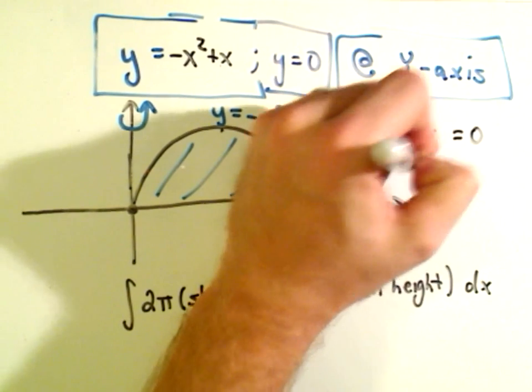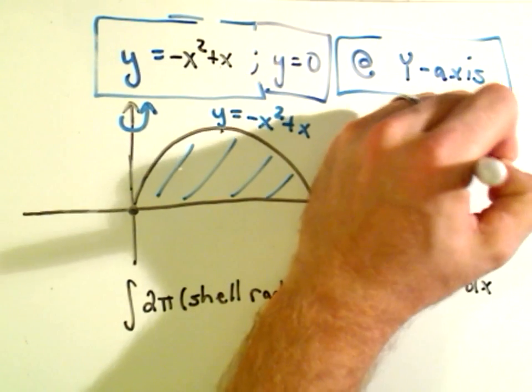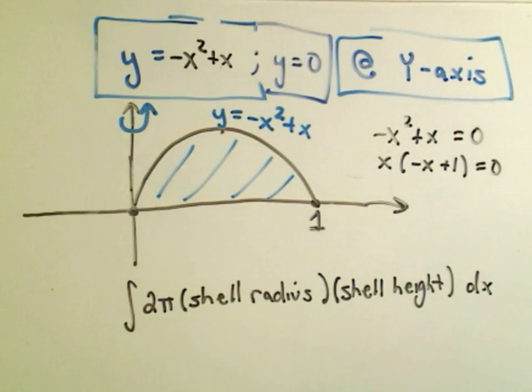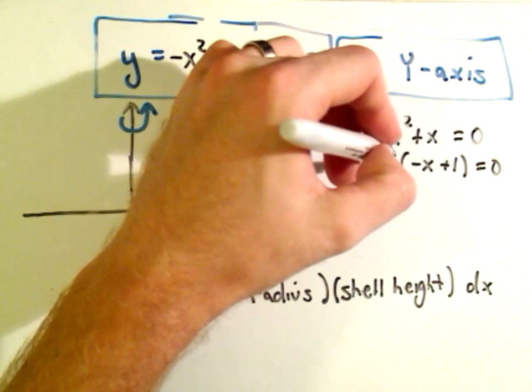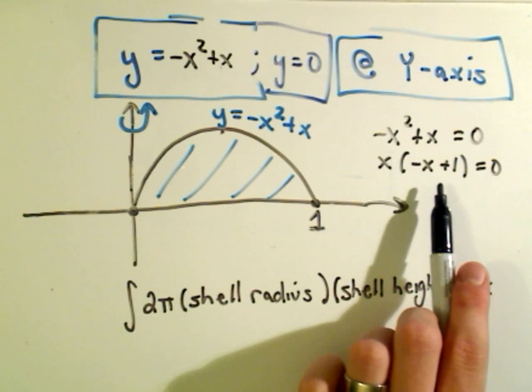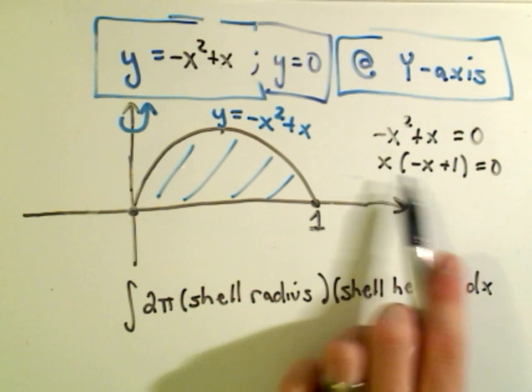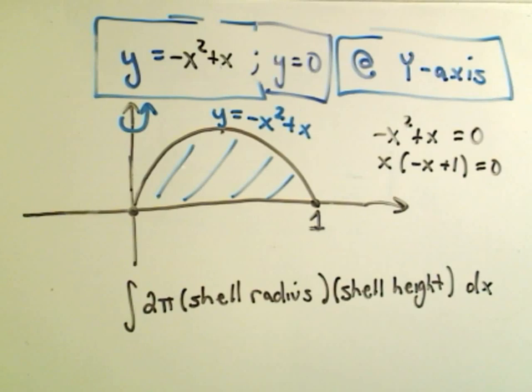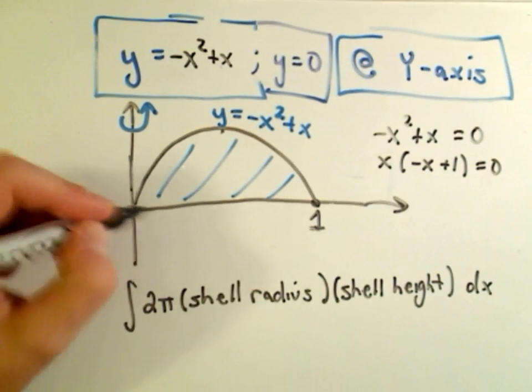You could factor out the x and have negative x plus 1 left over. And then if we solve each one of these pieces individually, we'll get x equals 0, and then x equals 1 as our solutions. So that's where it's hitting the x-axis.